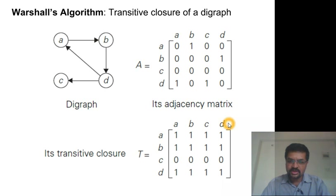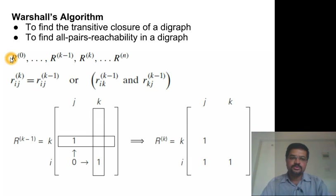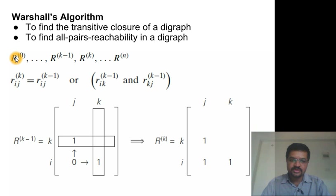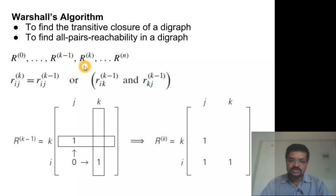This algorithm solves it using dynamic programming. The algorithm starts with a matrix called R0, and then through a series of transformations it reaches Rn. R0 is the adjacency matrix we have, and Rn is the transitive closure we are interested in, with many intermediate matrices in between. In general, Rk represents a matrix where at position i,j there is a path from i to j which can have the first k vertices as intermediate vertices.